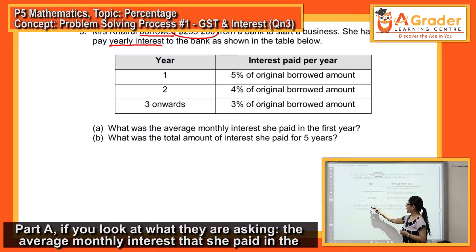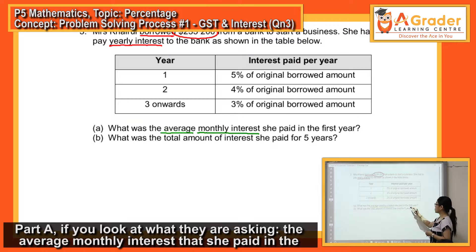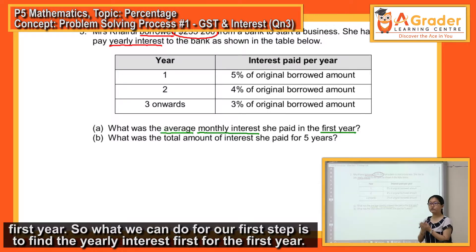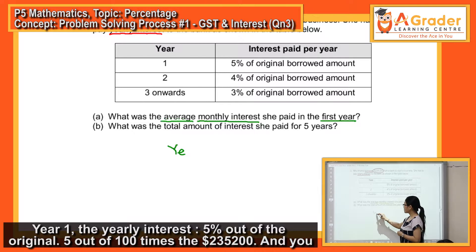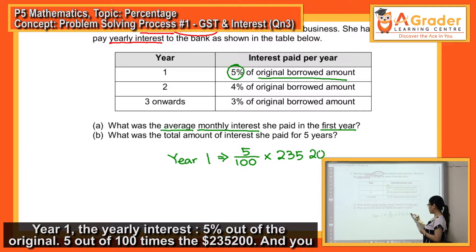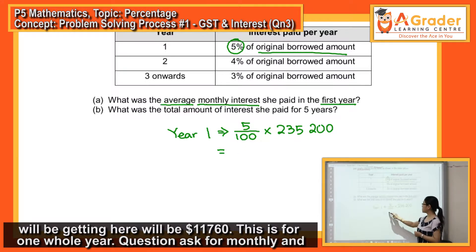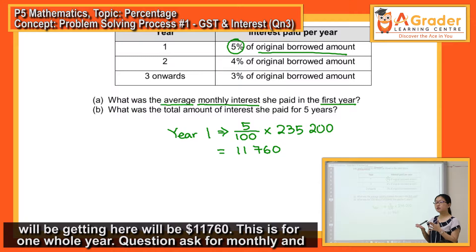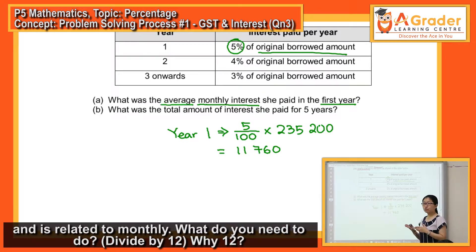Part A asks for the average monthly interest that she paid in the first year. Our first step is to find the yearly interest for the first year. Year one yearly interest: 5% of the original, which is 5 out of 100 times $235,200. That gives us $11,760 — this is for one whole year. The question asks for monthly, and it's related to average.